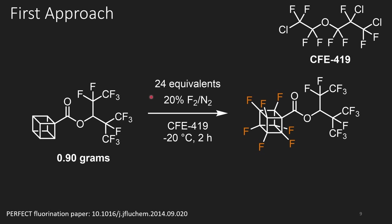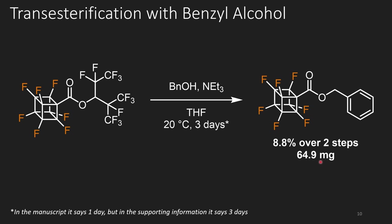Using 24 equivalents of 20% fluorine in nitrogen in a solvent called CFE419, they were able to convert this to the corresponding heptafluoro derivative. They didn't isolate it at this stage — a fluorine NMR for something like this would be a nightmare. So they performed a transesterification with benzyl alcohol. The supporting information states that three days were required for this transformation, though the manuscript body reports only one day. The yield over two steps was 8.8%, giving them 65 milligrams of material to push forward.